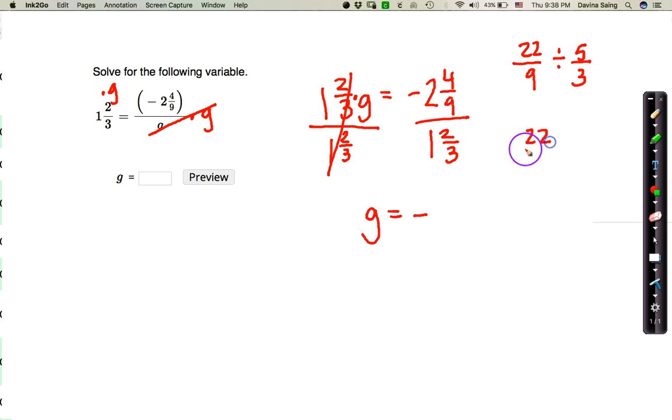Here, I'm going to now multiply by the reciprocal. So we're going to change that to multiplication. We're going to take the reciprocal of this fraction here. I'm going to check if I can cross-cancel. I can't. Here, I can. I can divide by 3. 3 divided by 3 is 1. 9 divided by 3 is 3, so multiply straight across. I'm going to get 22 over 15.